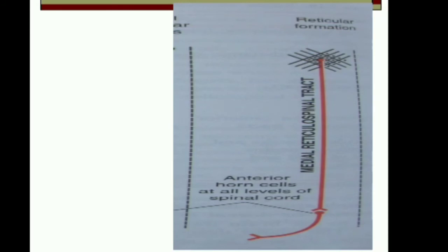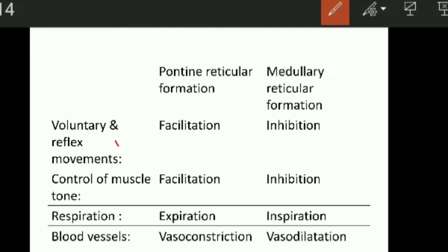The main functions of pontine and medullary reticular formation: pontine reticular formation is facilitatory for voluntary and reflex movement, whereas medullary reticular formation is inhibitory. Pontine reticular formation has a facilitatory role in the control of muscle tone, whereas medullary reticular formation has an inhibitory role. Pontine reticular formation is important for expiration, whereas medullary reticular formation favors inspiration. Pontine reticular formation causes vasoconstriction, and medullary reticular formation causes vasodilatation.